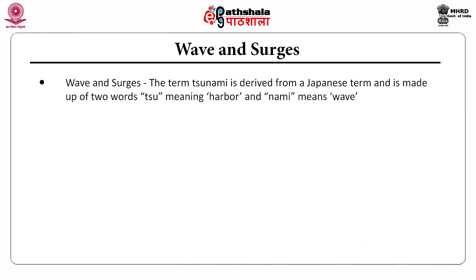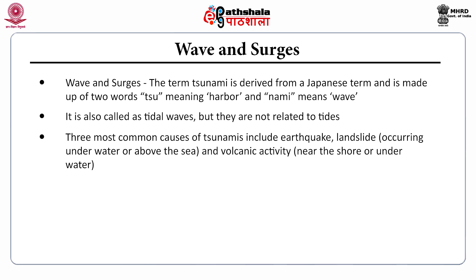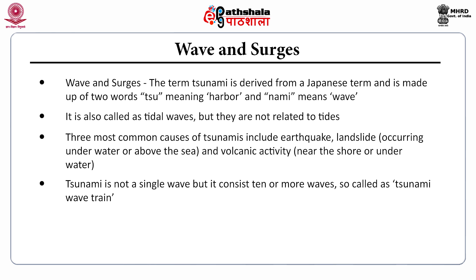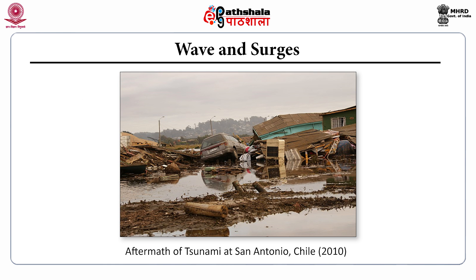Waves and surges: the term tsunami is derived from a Japanese term and is made up of two words — 'tsu' meaning harbour and 'nami' meaning wave. It is also called tidal waves, but they are not related to tides. The three most common causes of tsunamis include earthquake, landslide occurring underwater or above the sea, and volcanic activity near the shore or underwater. A tsunami is not a single wave but consists of 10 or more waves, called a tsunami wave train. Tsunami wave speed is controlled by water depth. This picture shows the aftermath of a tsunami at San Antonio in Chile.